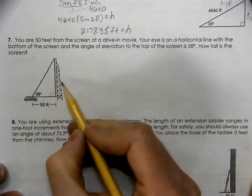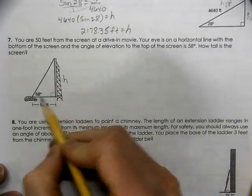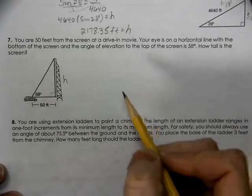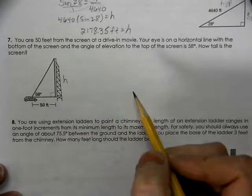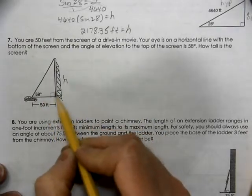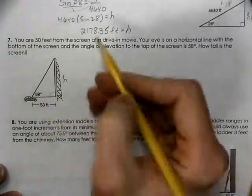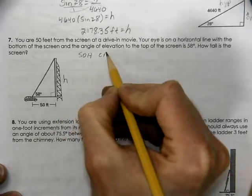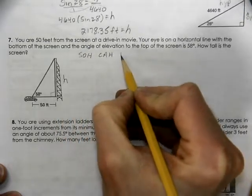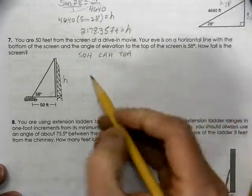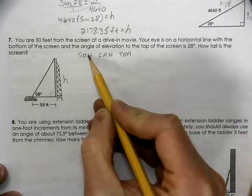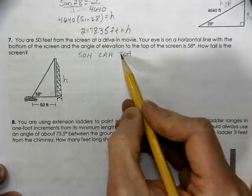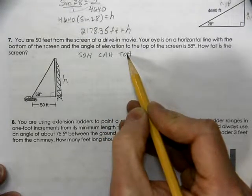So, we're trying to figure out the height of this screen, so what trig function would we use by the given information? Opposite over adjacent. Remember SOH CAH TOA. Sine is opposite over hypotenuse. Cosine is adjacent over hypotenuse. And tangent is opposite over adjacent.